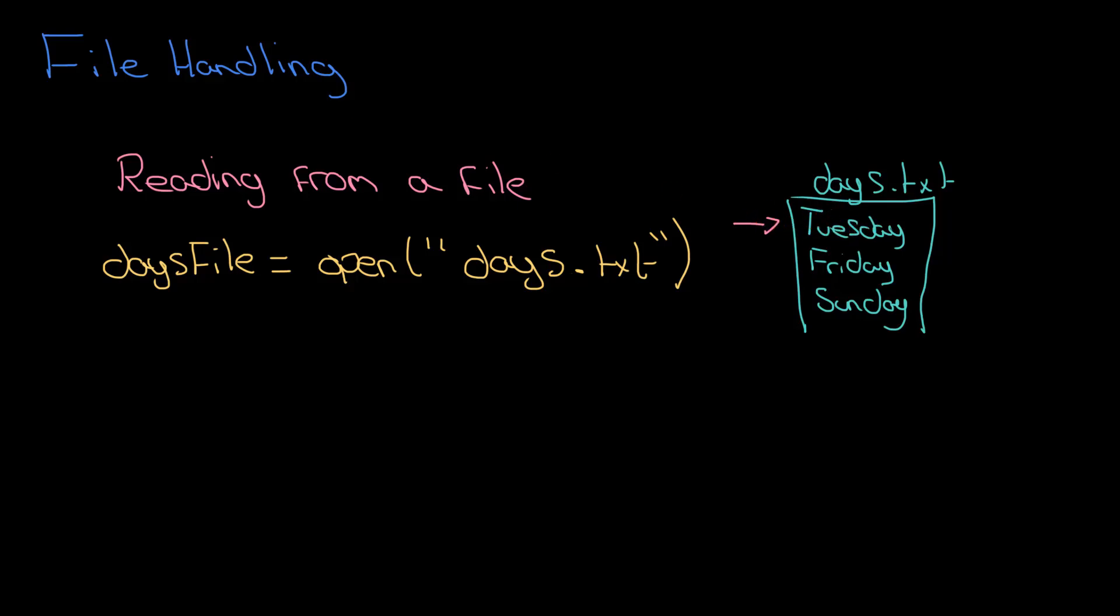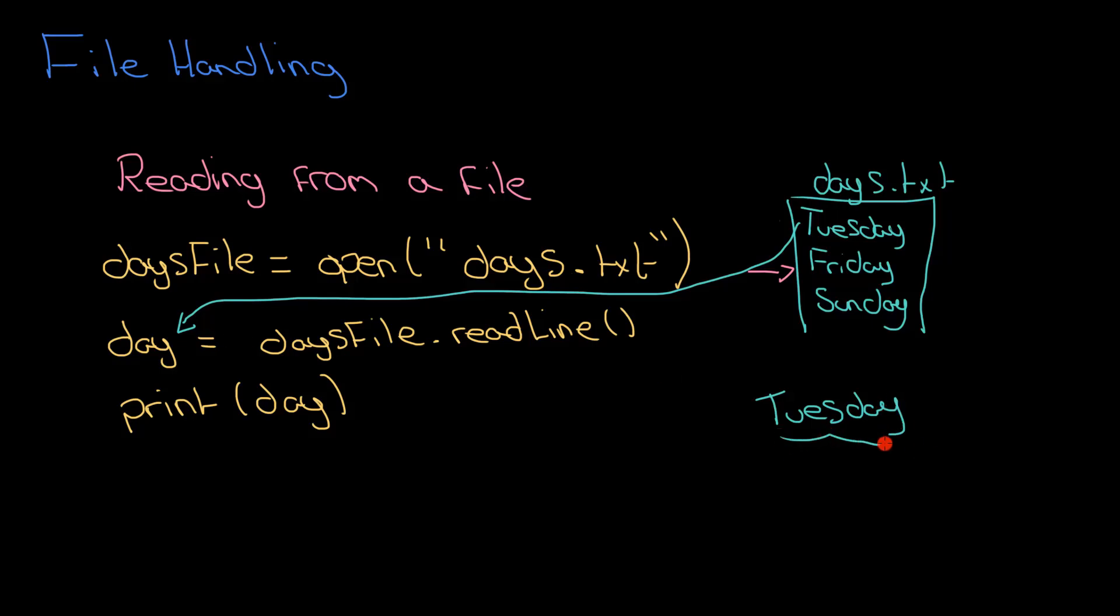And then I can do this: day equals daysFile.readLine. So not writing now, we're reading, so we read a line. Can you imagine what happens when I run this particular function on daysFile? Yeah, Tuesday makes its way from the file all the way over here into this variable. And also what happens is, very important, this arrow here that moves down one. So in this case it moved down to Friday. So what will happen if I print day now? Yeah, it will be the word Tuesday that would get output onto the screen.